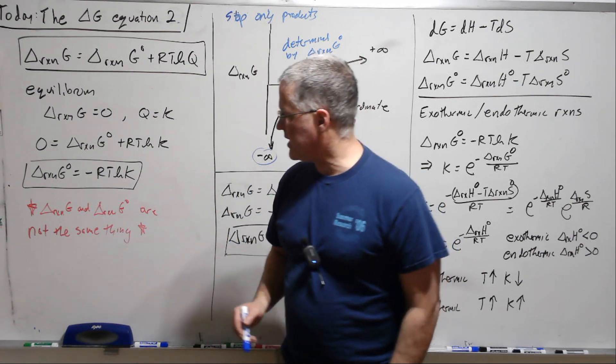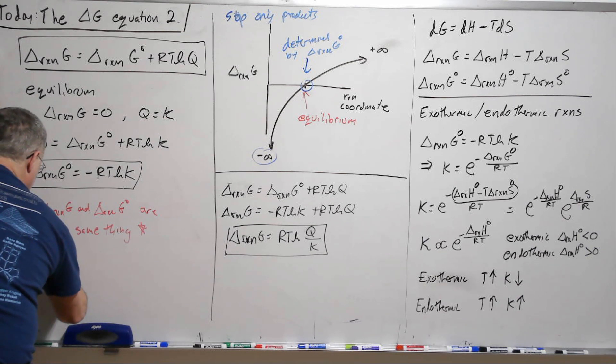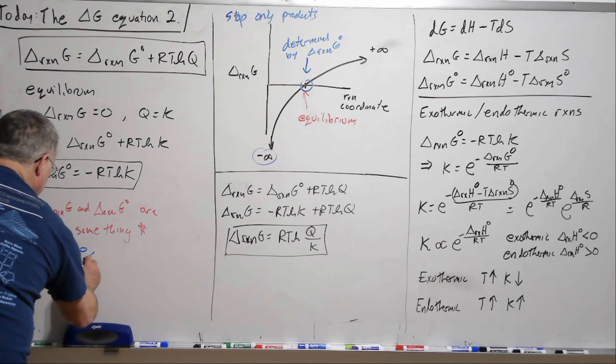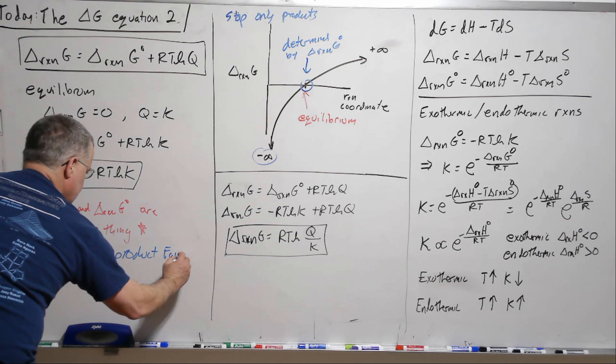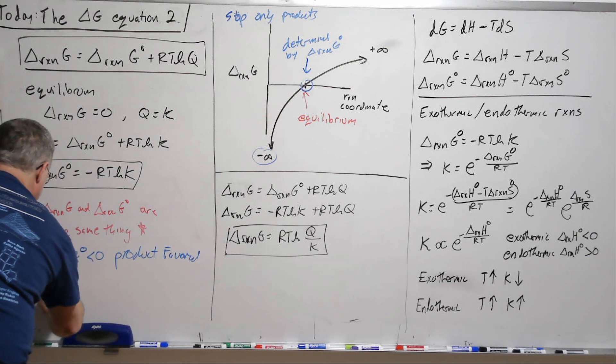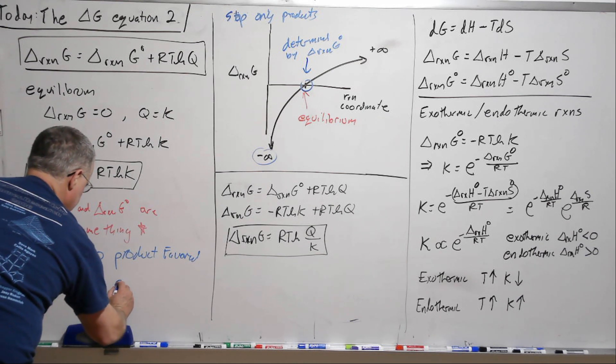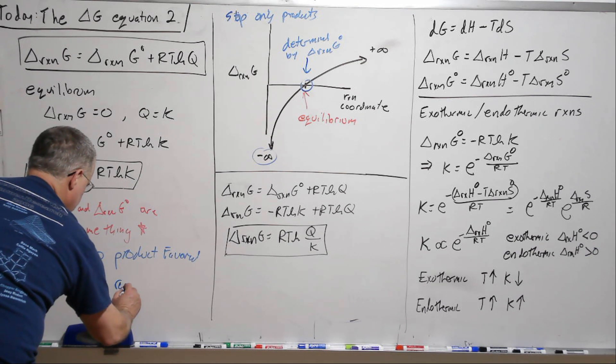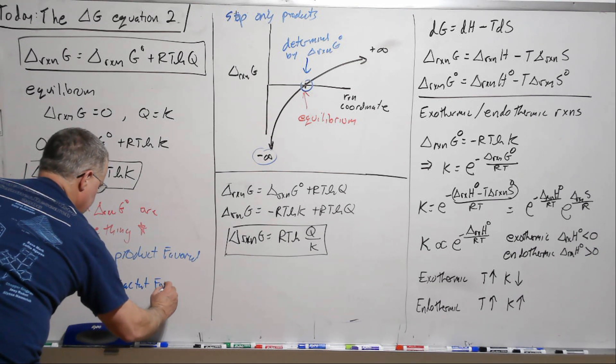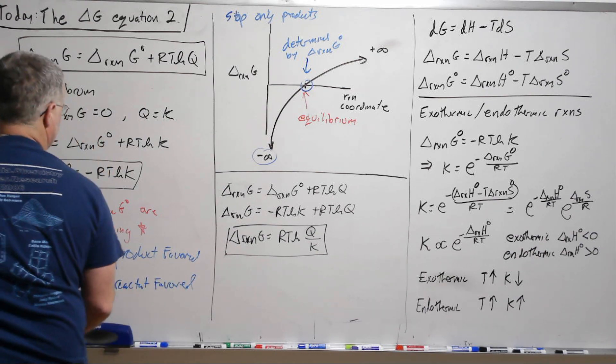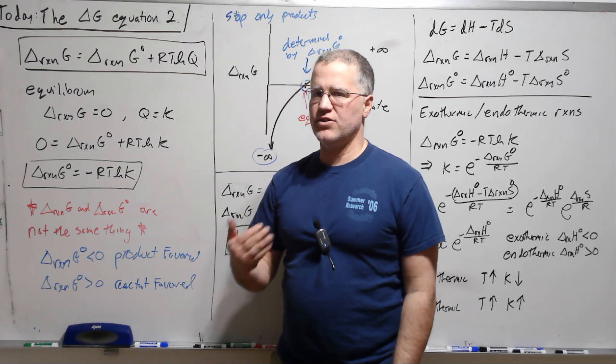And this can classify reactants as product favored and reactant favored. So those labels to a reaction are referring to the Delta G standard.